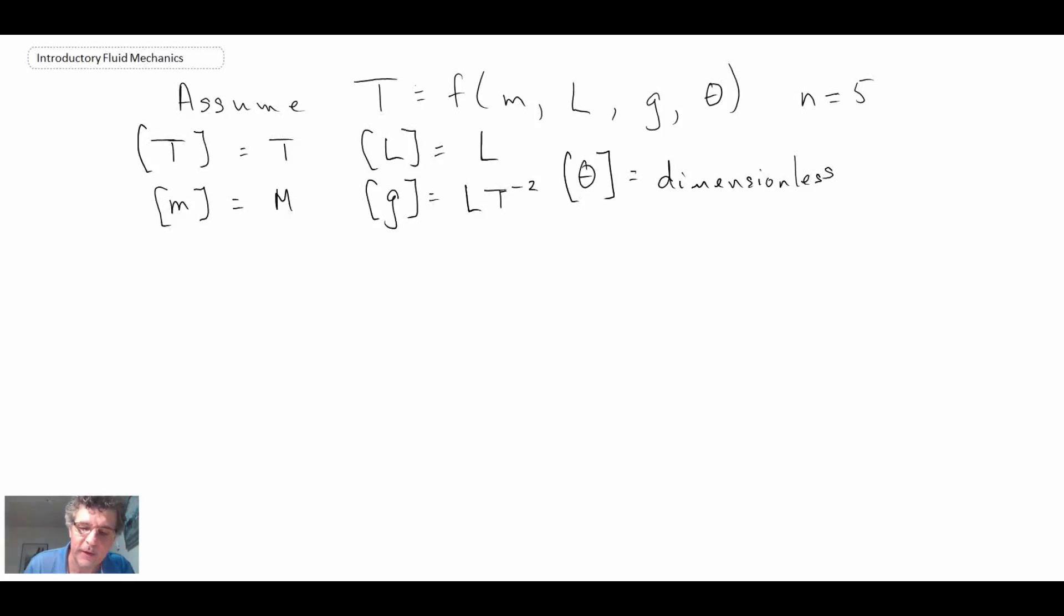And what I'm now going to do is write out the dimensions of all of the main parameters that we have involved or the main variables. And for theta, the angle, that is dimensionless. So what we're going to do, we're going to choose three of our different parameters for our base group and we don't want to include T. So what we will do is we will choose m, L, and g. And so according to our analysis technique, we have m is equal to r which is equal to 3. And with that, we can expect to have n minus r is equal to 2. We should have two pi groups coming out of this analysis.